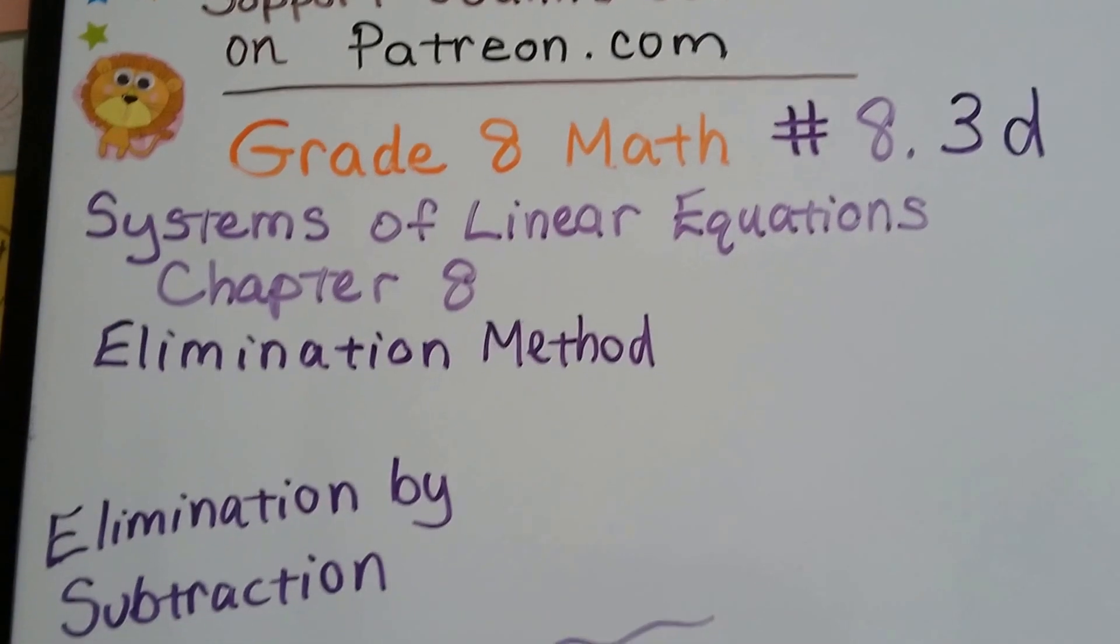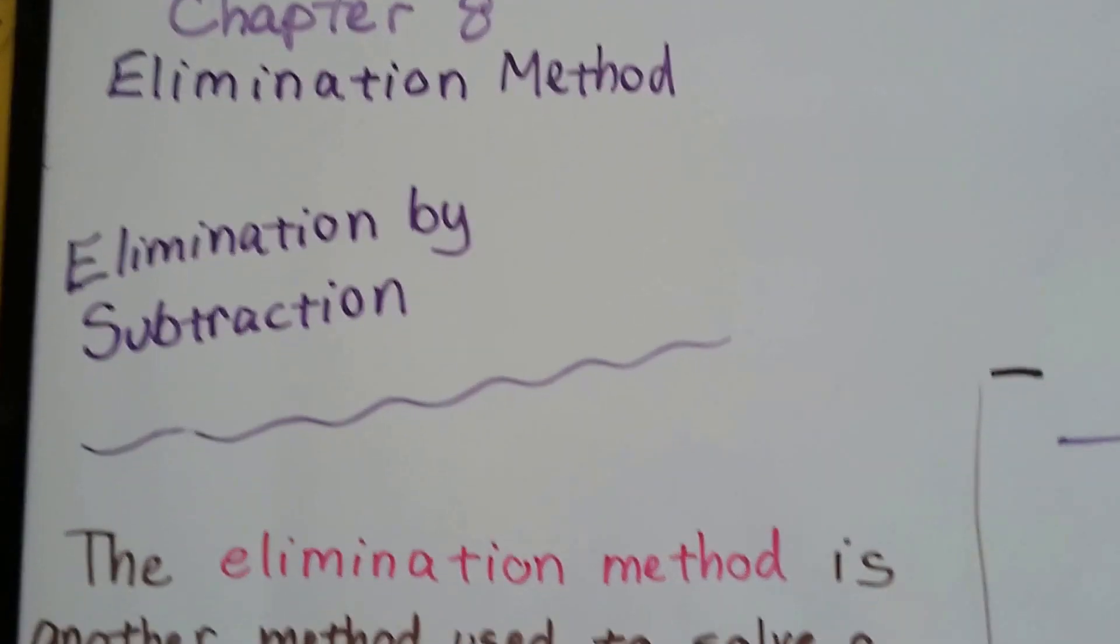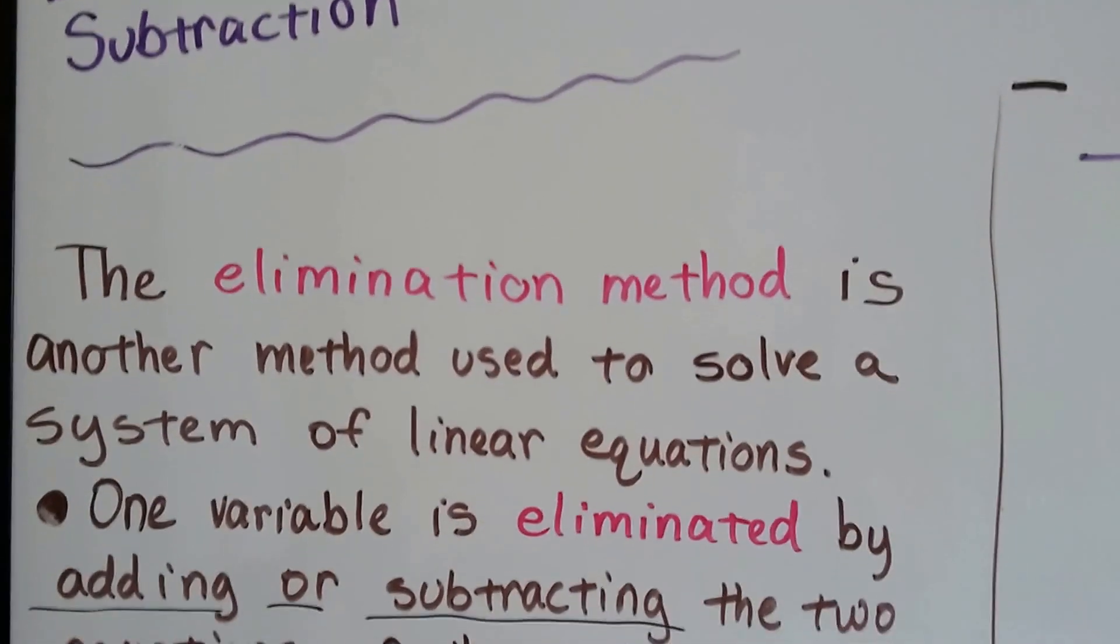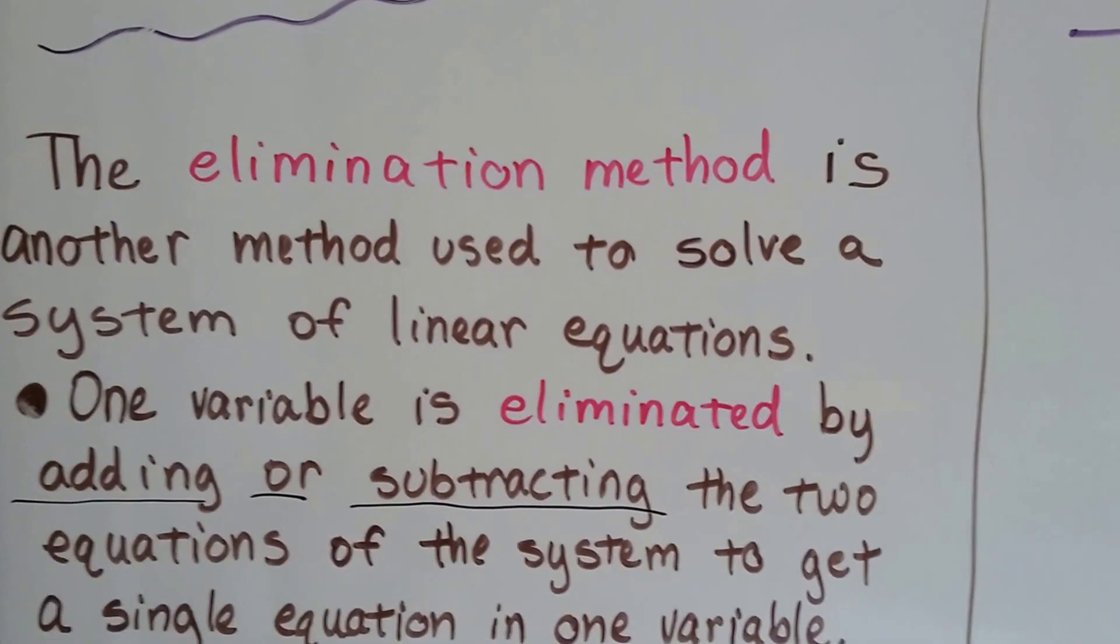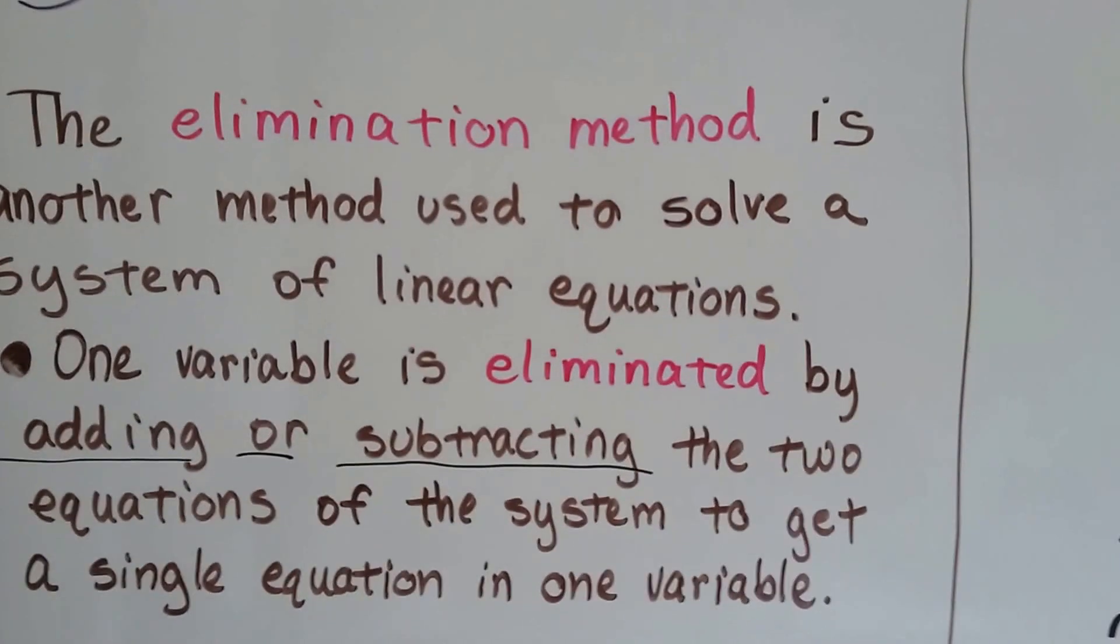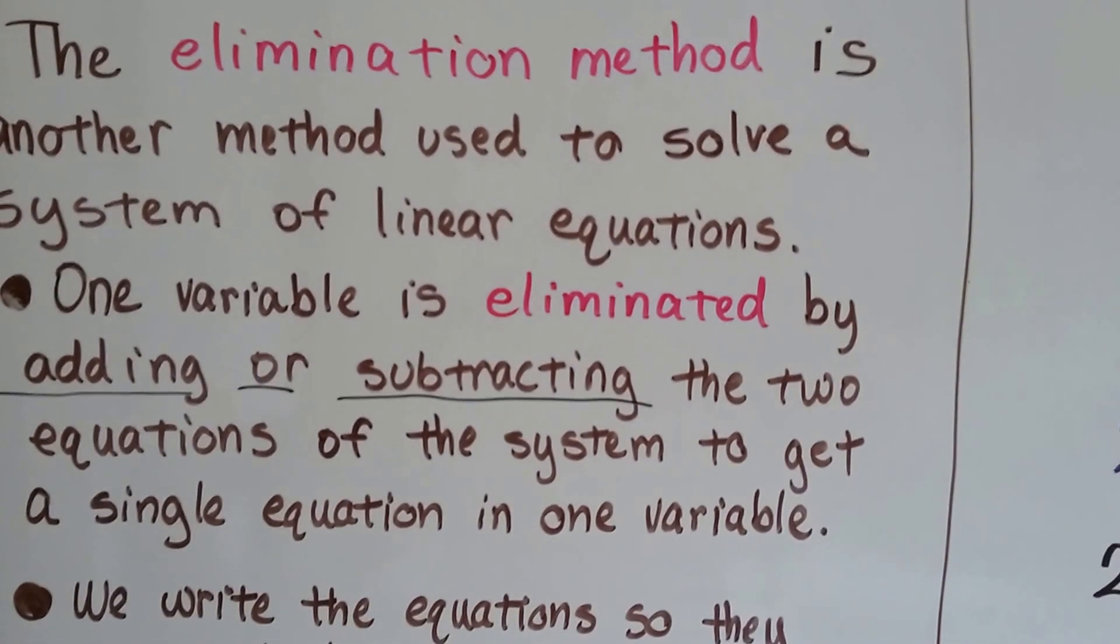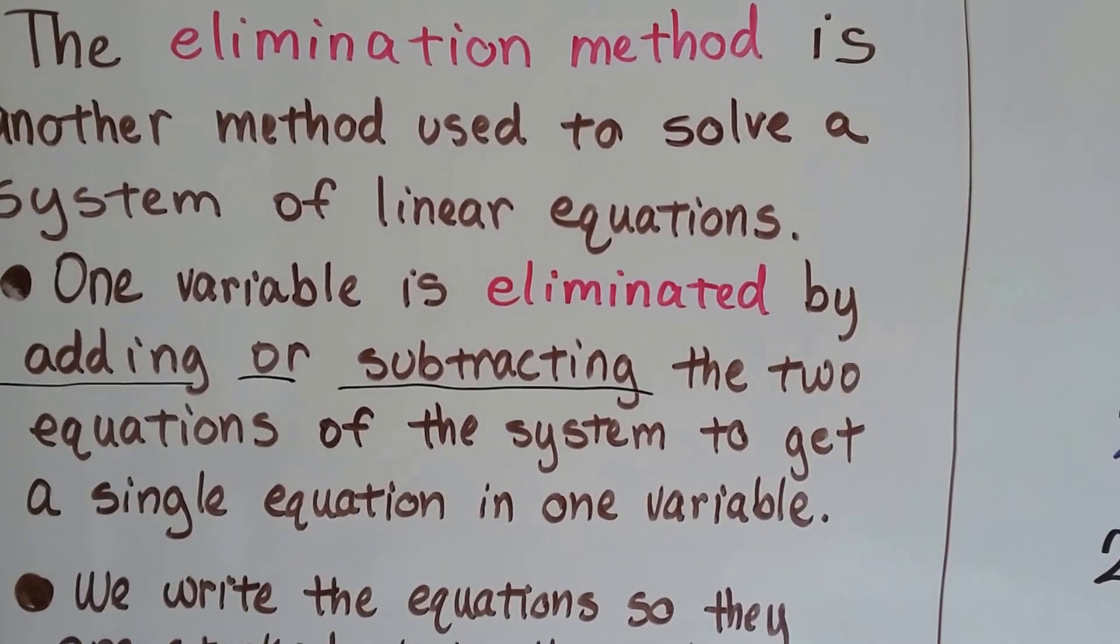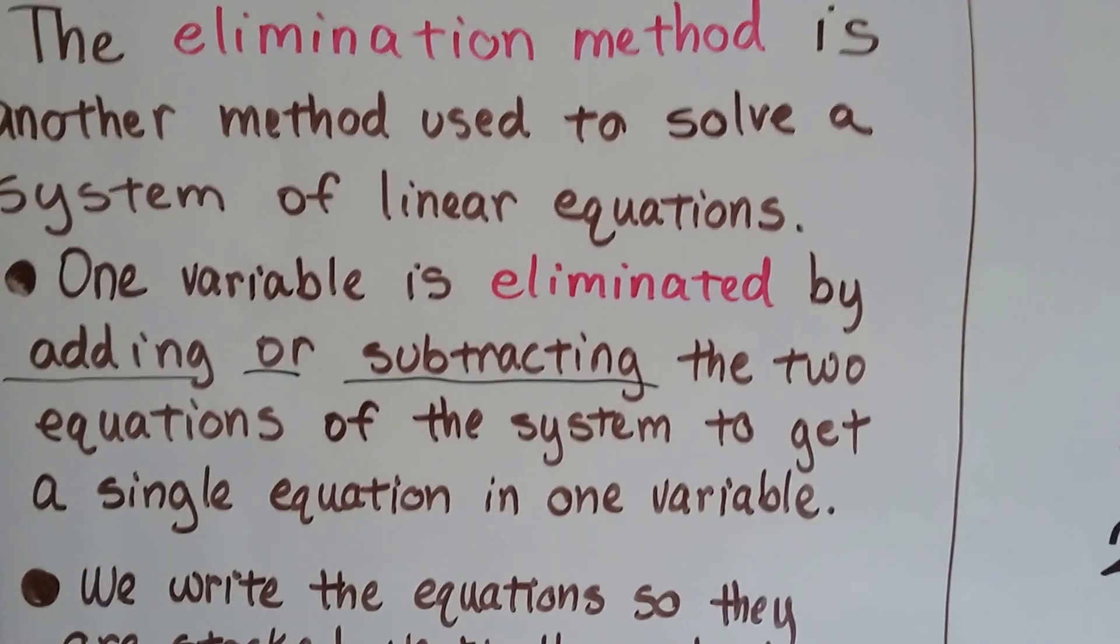Grade 8 math number 8.3d, elimination by subtraction. The elimination method is another method used to solve a system of linear equations, and a variable is eliminated by adding or subtracting the two equations of the system to get a single equation in one variable.